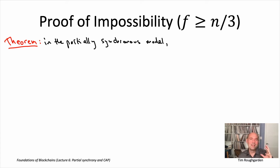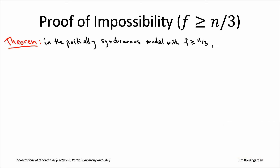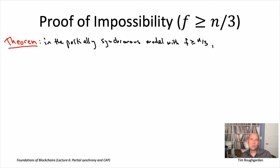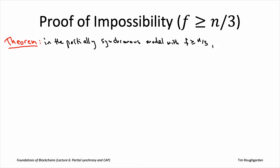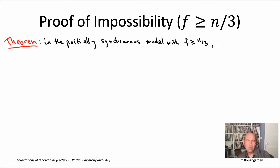When people are talking about blockchain protocols, this is literally that 33%. I'm going to state the impossibility results for a single-shot consensus problem in Byzantine agreement, but this is going to automatically apply more generally to the multi-shot consensus problem of state machine replication. Let's remember what our goals are in the partially synchronous model. During that asynchronous phase while we're under attack, the FLP impossibility result tells us we have to give up on something — we're not going to have simultaneous safety and liveness during that asynchronous phase.